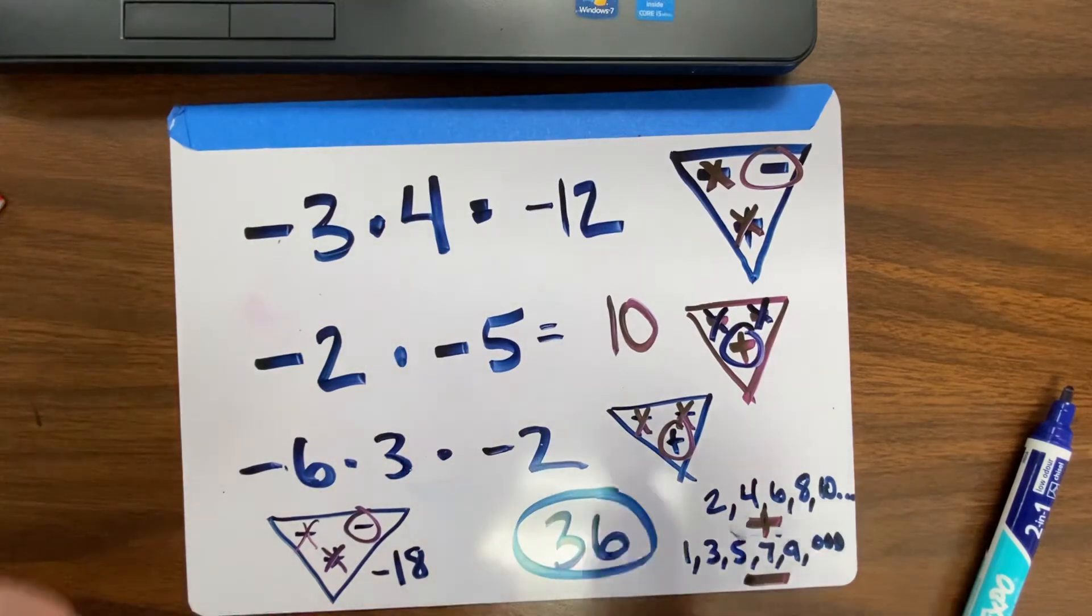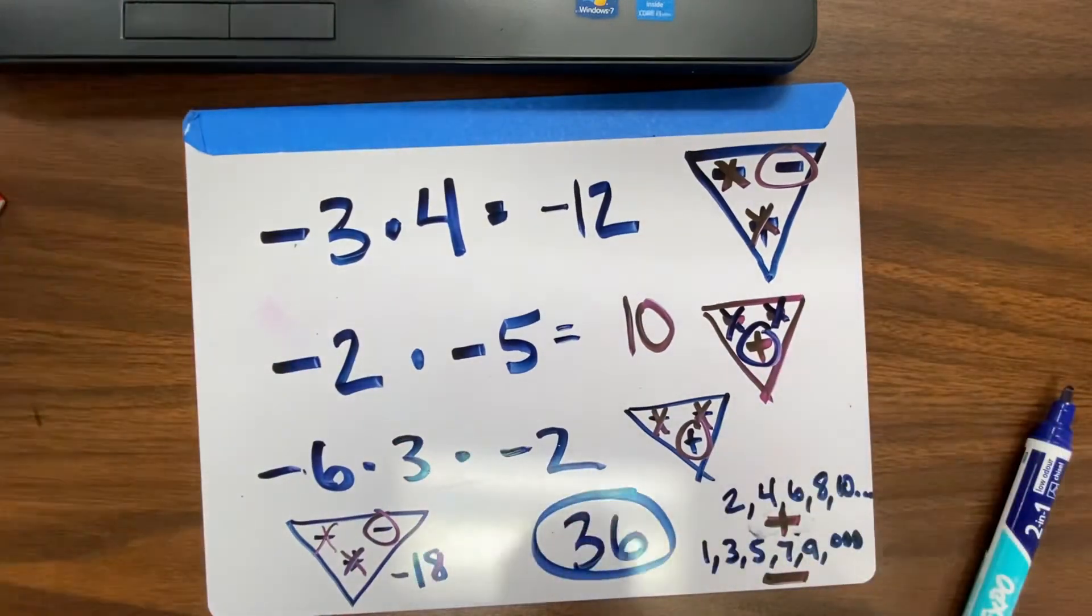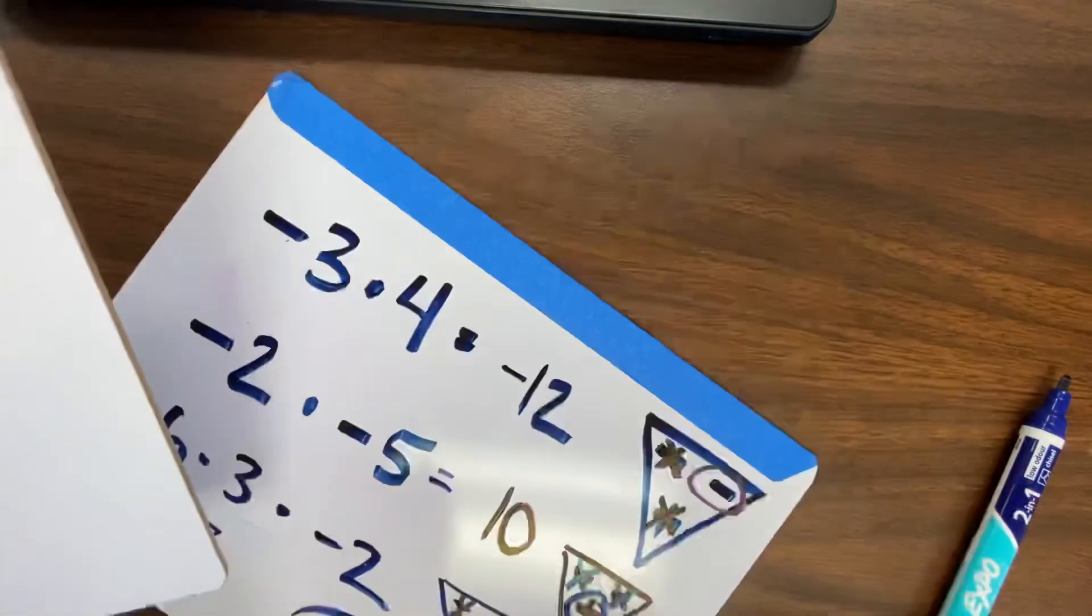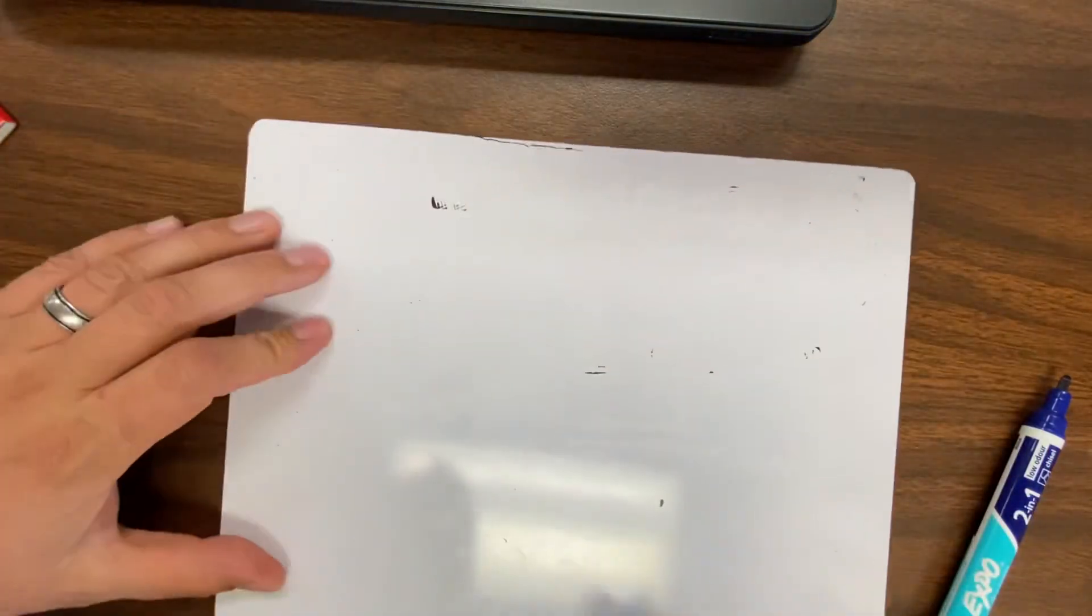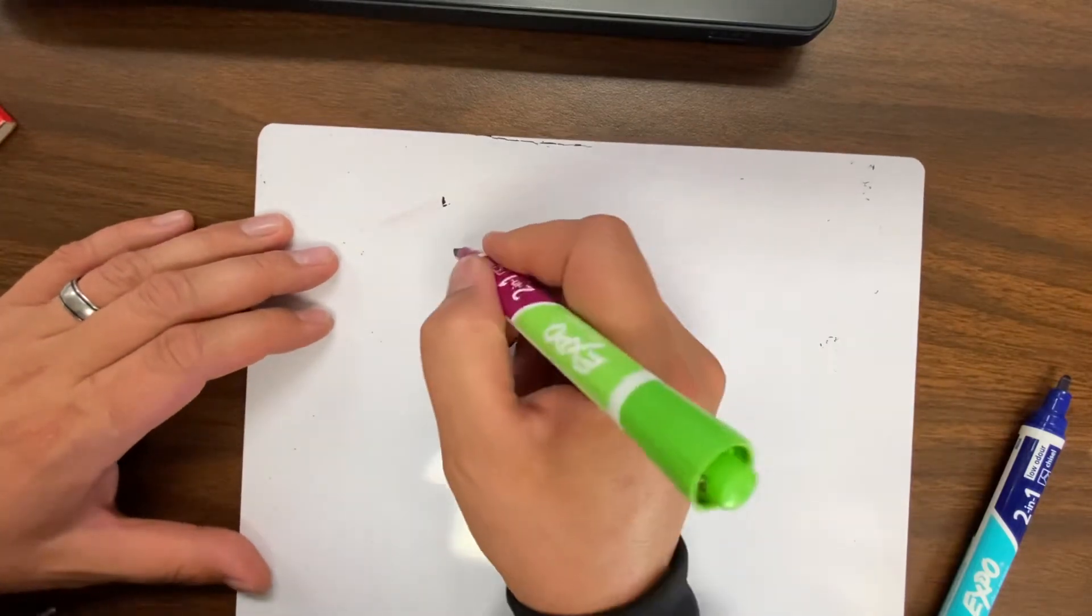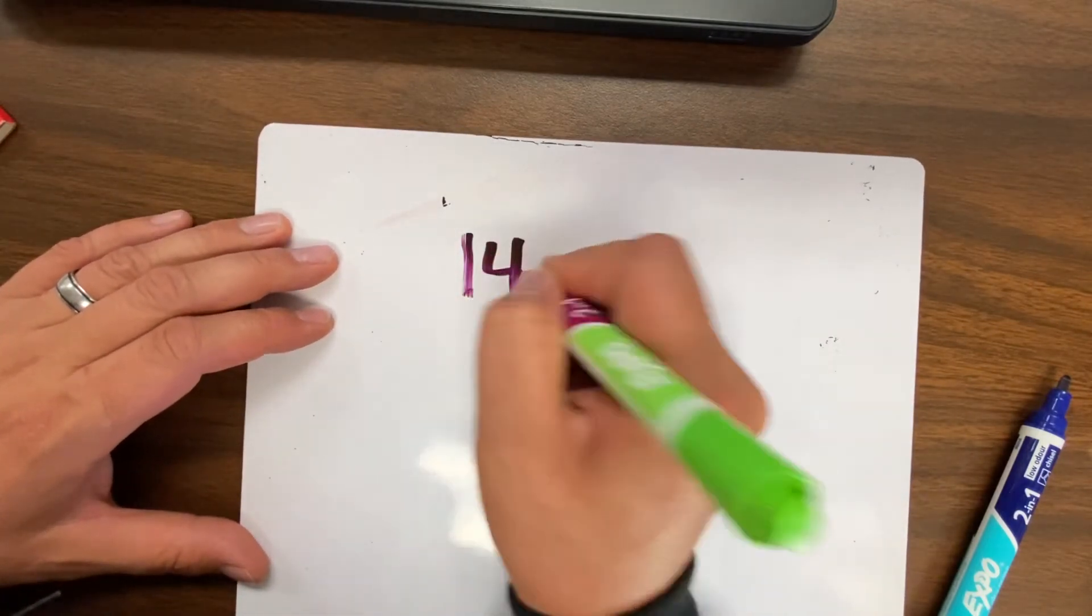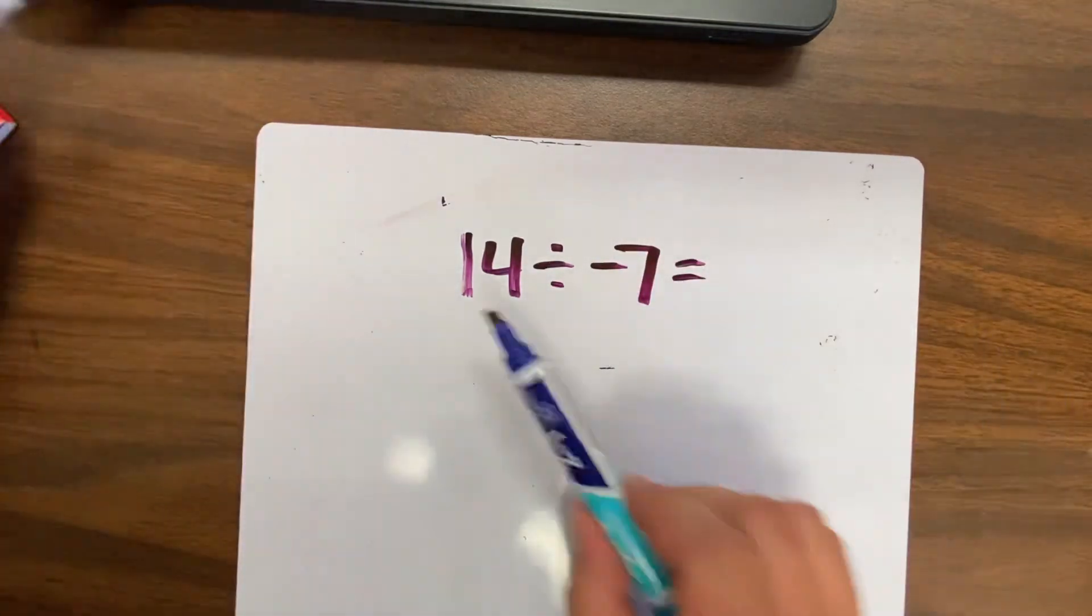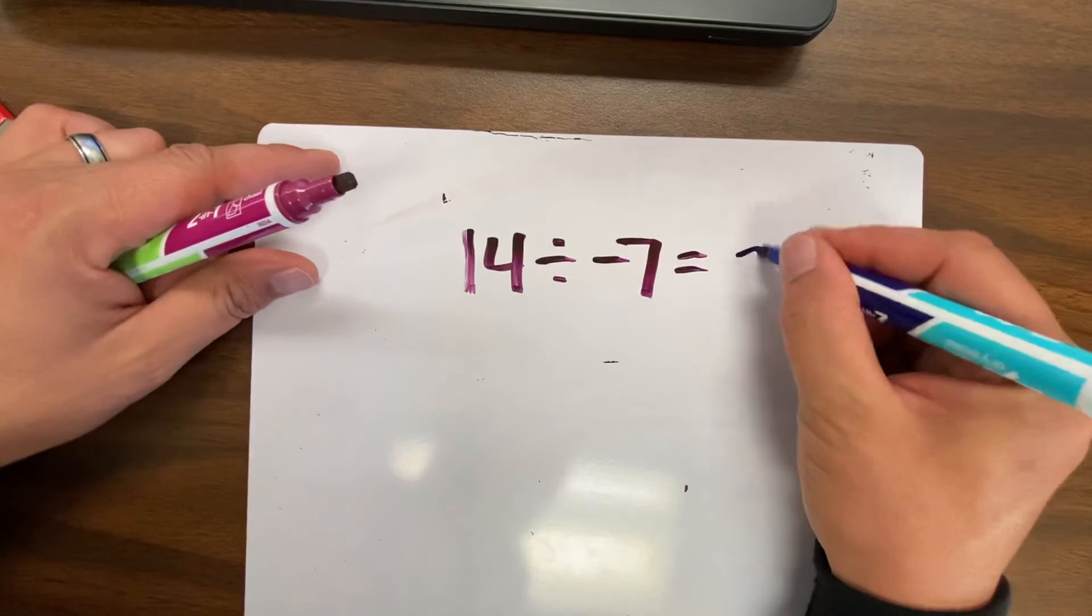And now the same could be done for dividing. For division, let me switch boards here. We can still use the triangle rule. We can do everything the same, just instead of multiplying, we're dividing. So 14 divided by negative 7. We just do normal. 14 divided by 7 is 2.